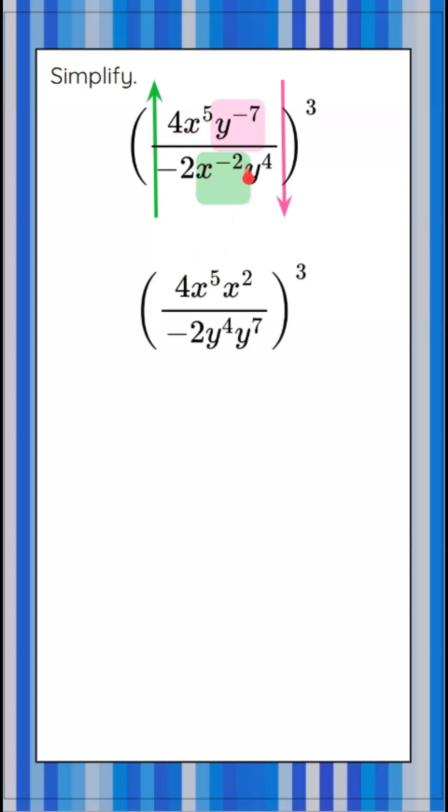4x to the 5th, and our x squared came up. Negative 2, y to the 4th, and then bring down y to the 7th. So they're in their reciprocal locations and no longer negative exponents.